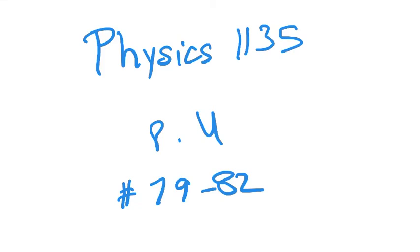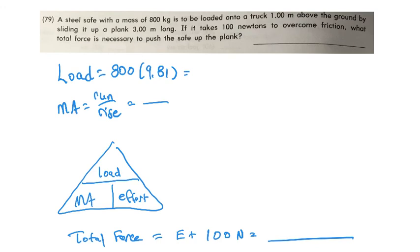Let's talk about the last few problems on page U of Physics 1135 with mechanical advantage. Okay, let's look at the problem here. First of all, it says a steel safe with a mass of 800 kilograms.